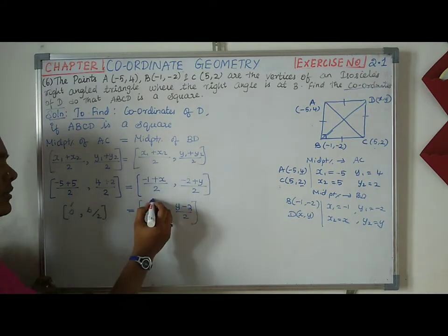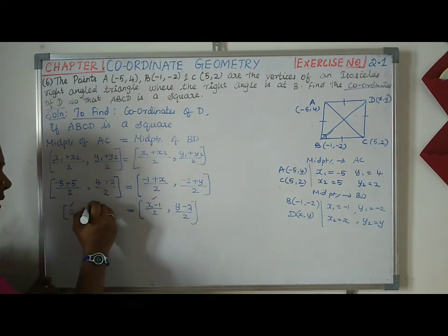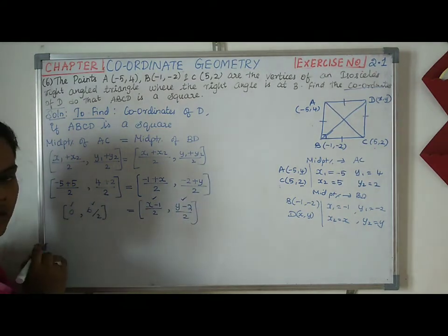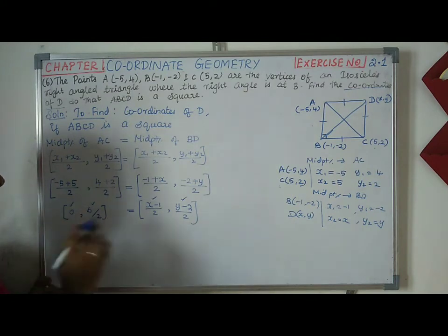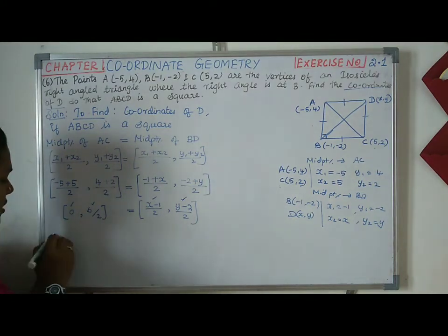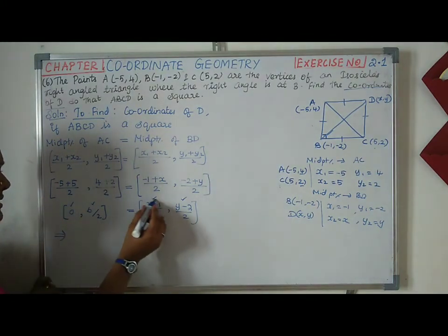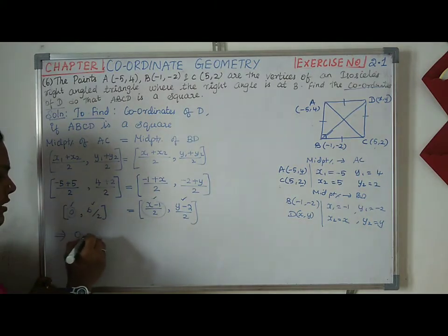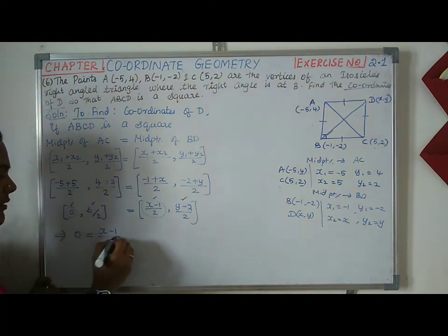In the x value equal, in the y value equal. Equating the first term: 0 equals x minus 1 divided by 2.